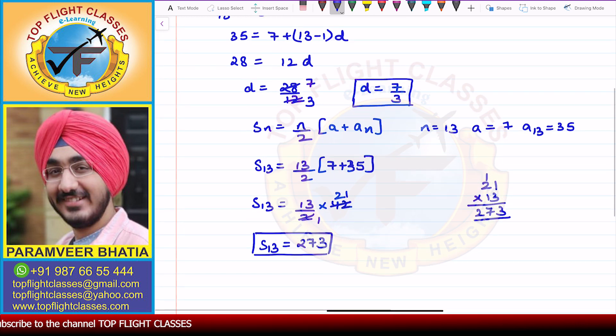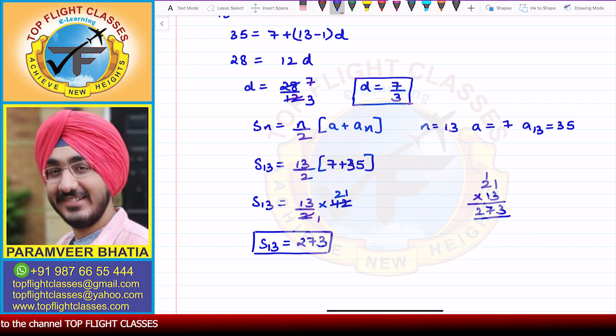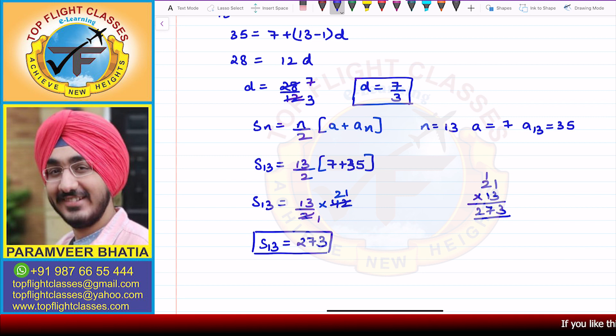So now we have D, which came out to be 7 by 3, and we have S13, which came out to be 273. This is what is required in this question.